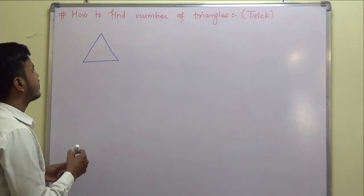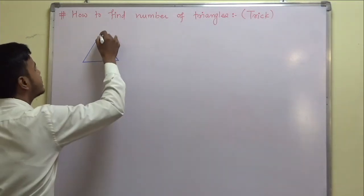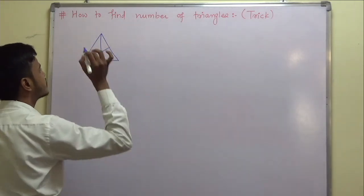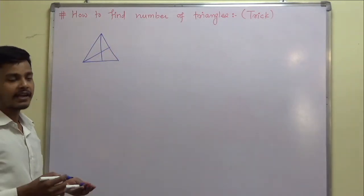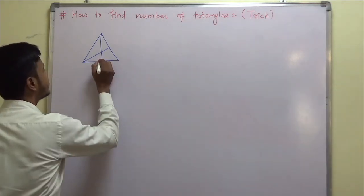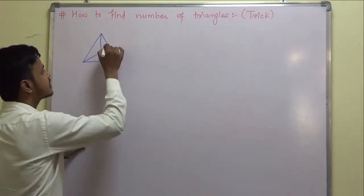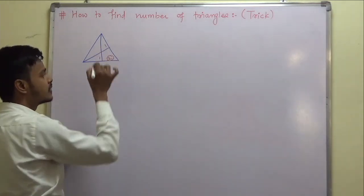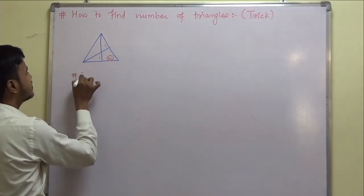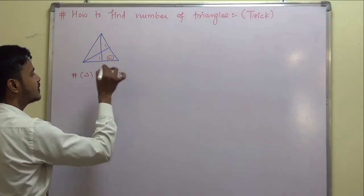Suppose this is a triangle we have. How many number of triangles do we have? If you go with the flow like we have done in the earlier video, you count 1, 2 on one side and 1, 2 on the other. So the number of triangles is equal to 2 cubed, which is equal to 8.